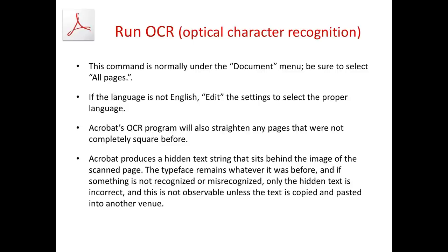After combining, page through to verify all pages are there and in the correct order. After you get them all combined, run the optical character recognition. This command is normally under the Document menu — be sure to select all pages. If the language is not English, you can edit the settings and select the proper language dictionary. The Acrobat OCR program will also straighten any pages that were not completely square. What Acrobat produces is a hidden text string that sits behind the image of the scanned page. The typeface you see remains as scanned; if something is misrecognized, only the hidden text is incorrect. The real copy of record is what you see, not the hidden text string.